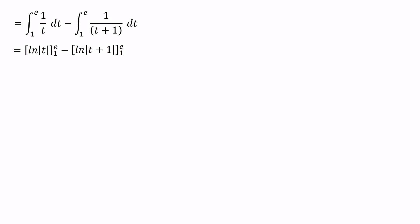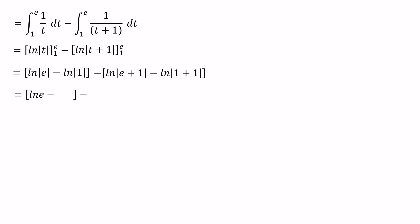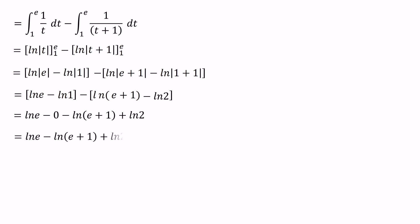Finally, we need to substitute the upper and lower limits. For the first term, ln modulus t, we evaluate from lower limit 1 to upper limit e. For the second term, ln modulus t plus 1, we evaluate from 1 to e. Since e and 1 are positive values, the modulus signs are removed. ln 1 equals 0. Removing the brackets gives ln e minus 0 minus ln(e plus 1) plus ln 2. Using log properties, we can write this as ln of e times 2 over e plus 1. The final answer is ln(2e over 1 plus e).